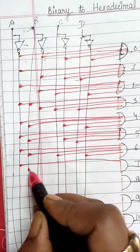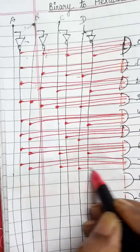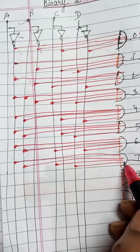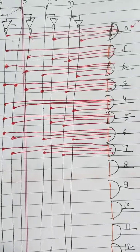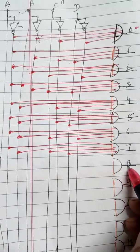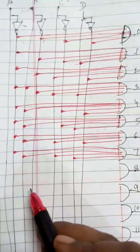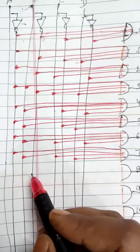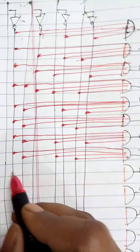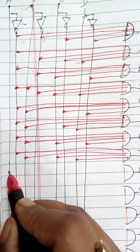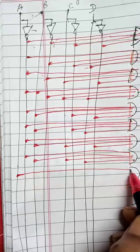For 7 — binary 0111 — connect 0, 1, 1, 1. For 8 — binary 1000 — this AND gate will be activated when the first input line D is uncomplemented and the rest are complemented, meaning D is 1 and A, B, C are all 0.